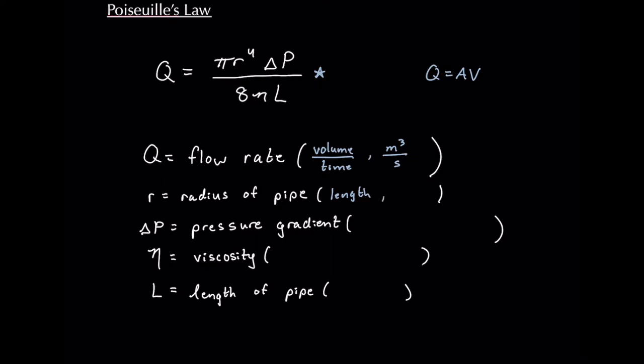So r quite simply is a radius, of course in units of length and most commonly specifically found in SI unit of meter. Now delta P is all one variable despite it having two characters, the delta Greek letter and the P. That symbol simply means a pressure gradient. Another way we could write this is maybe one pressure minus the other pressure.